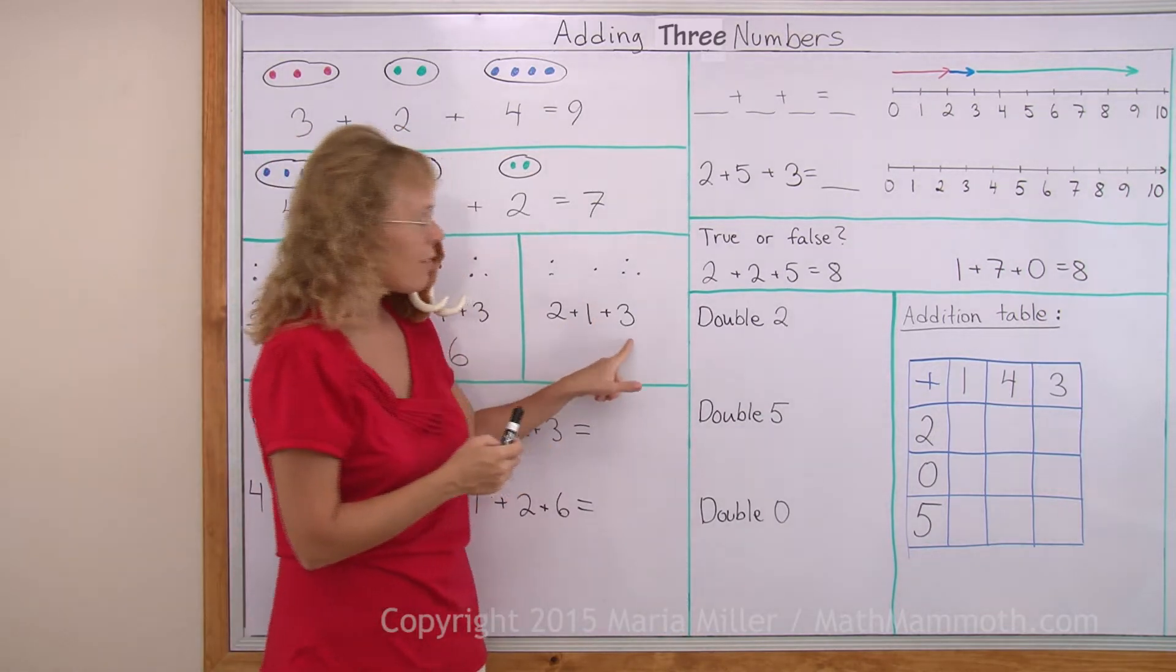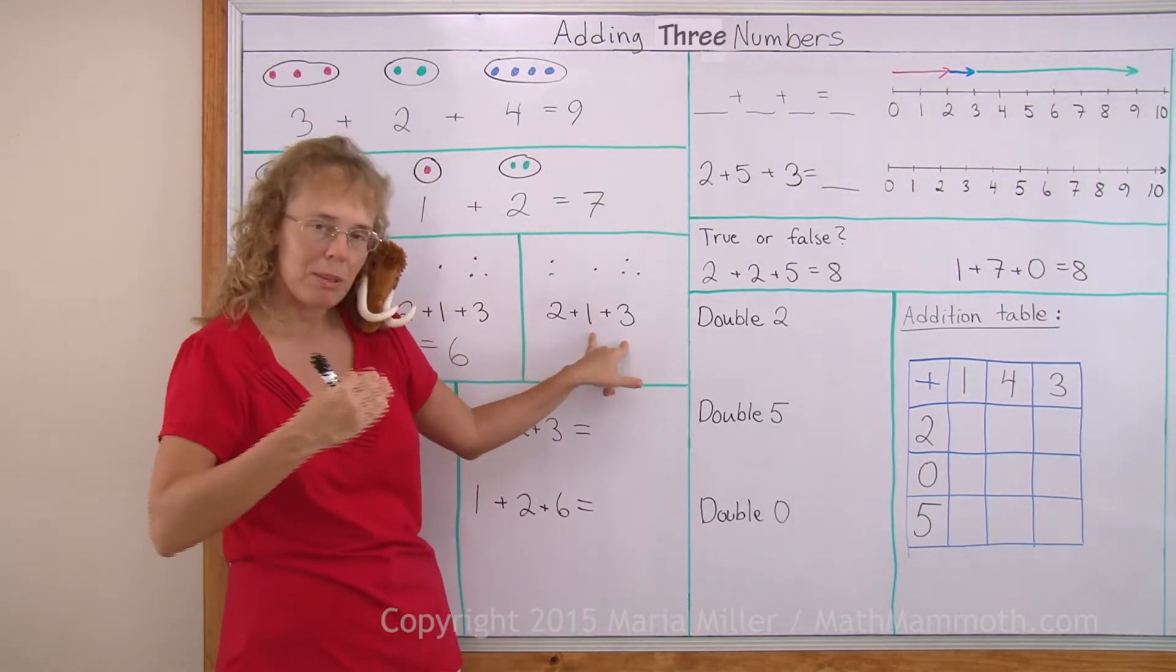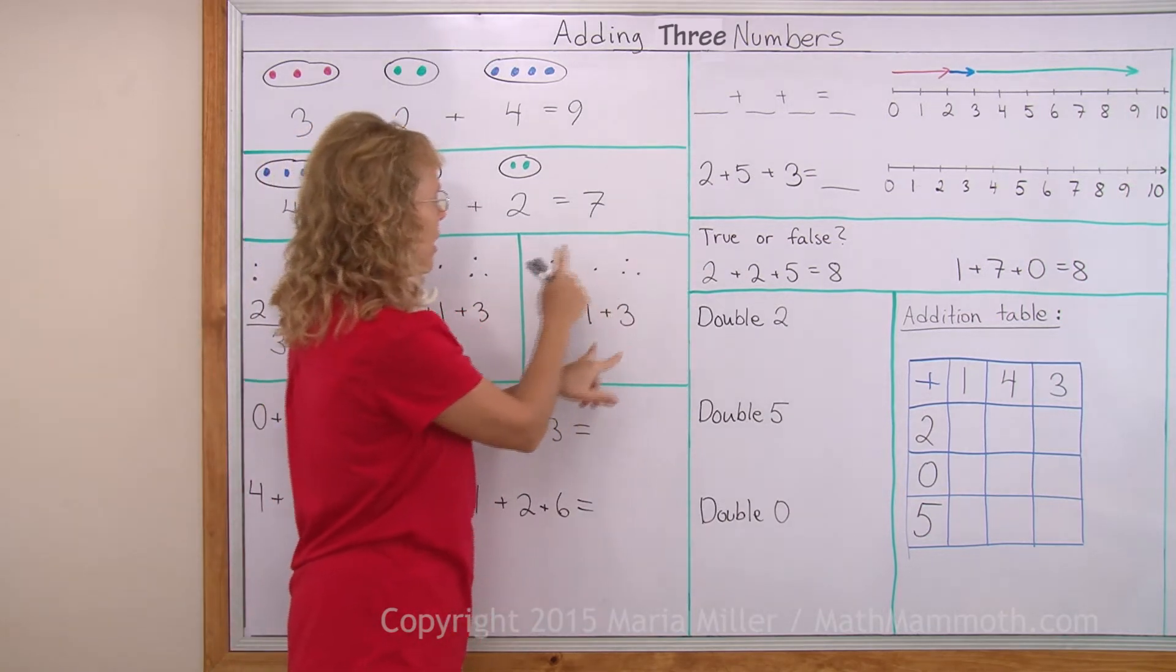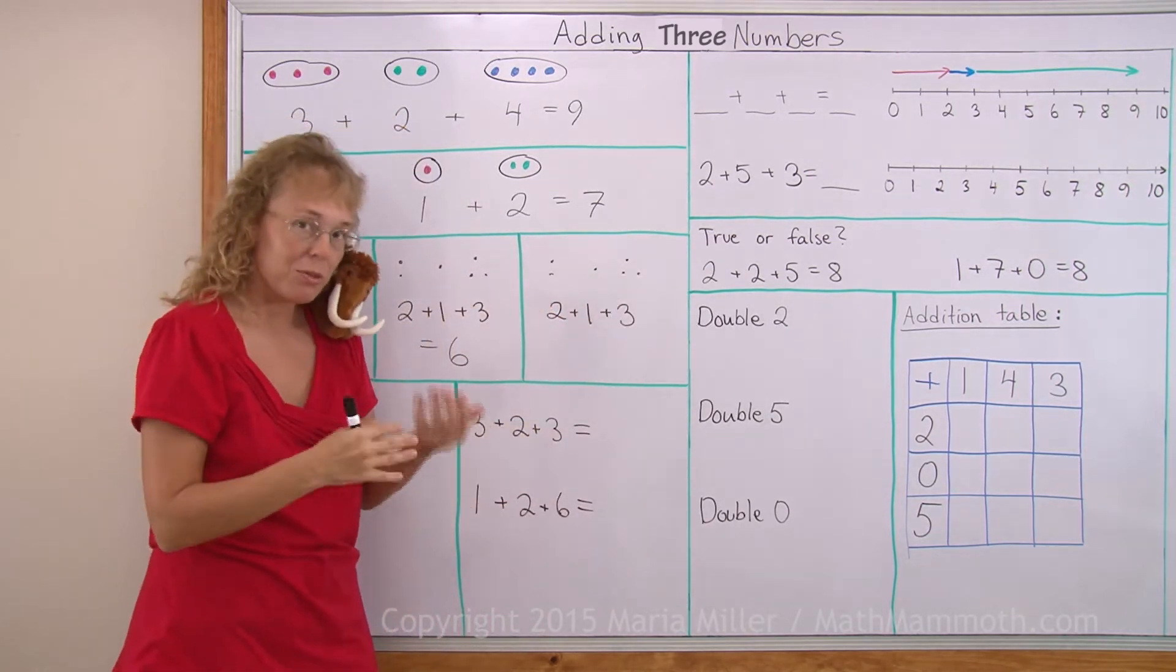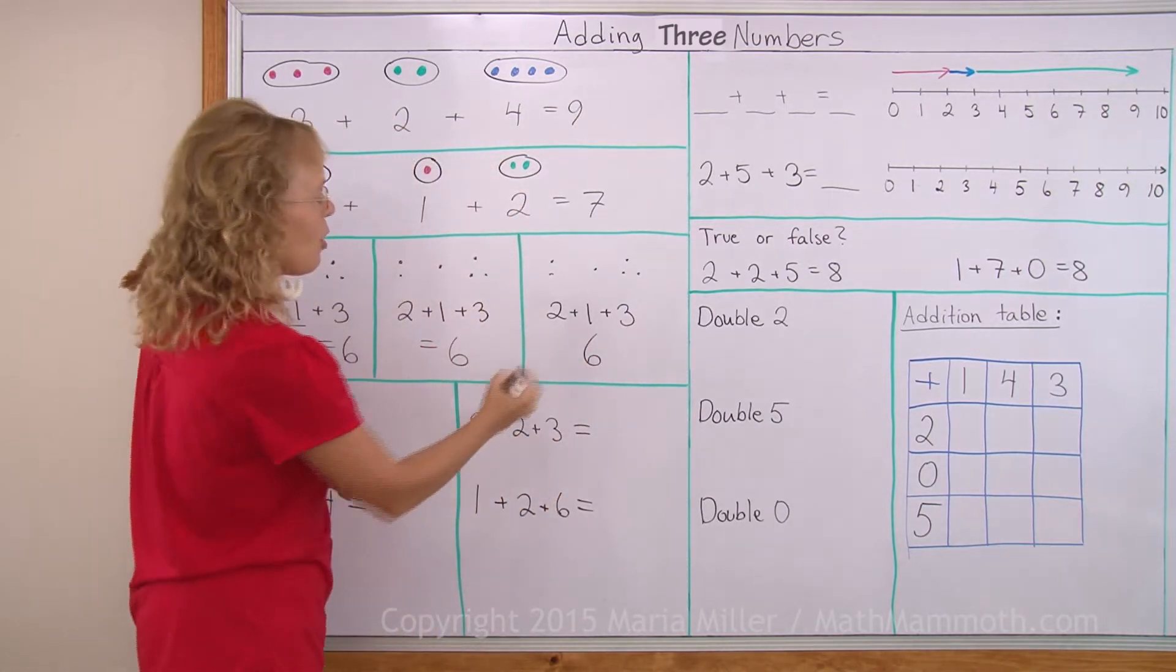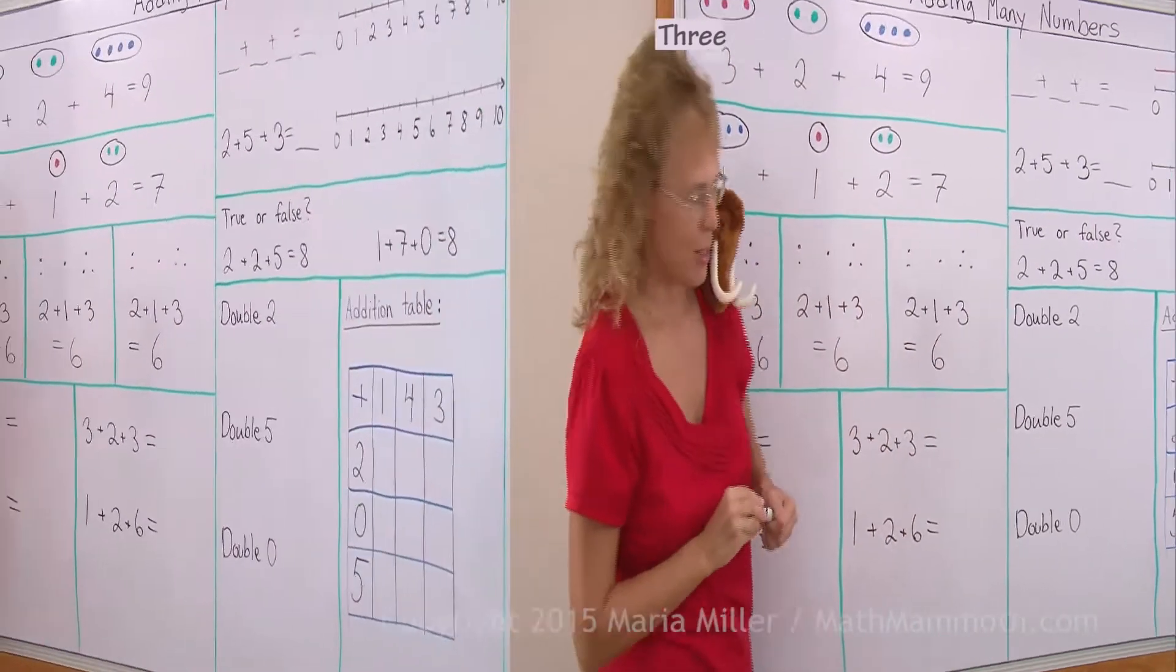Or let's say that I add one and three first, or three and one. What's three plus one? That's four. These make four and then I add two more. Four and two, four plus two, that is six. So any way you do it, you'll get the same answer.